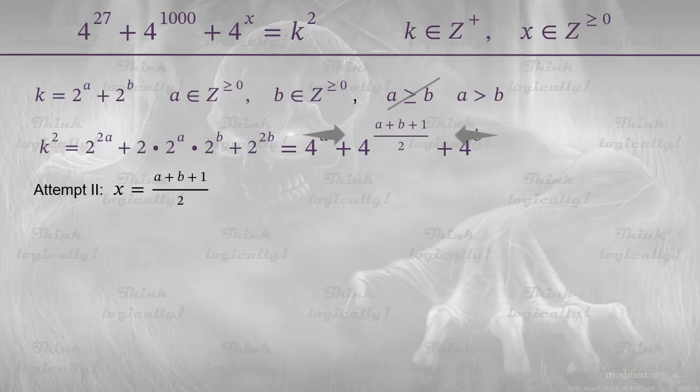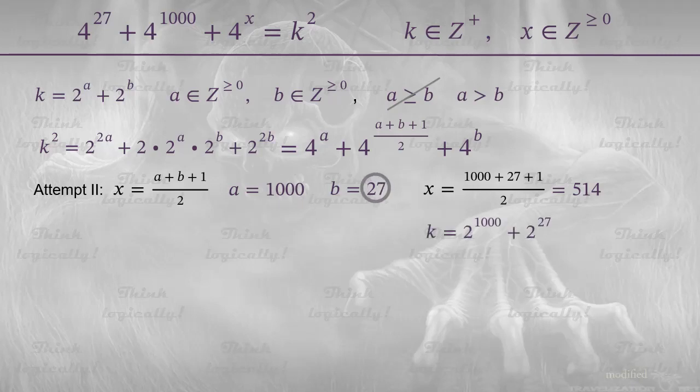Assuming x to be a plus b plus 1 over 2. Again, a is 1000. But this time b is 27. And we can find the value of x straight away. It is 514. And finding k is not a problem either. It is 2 to the power of a plus 2 to the power of b, which is 2 to the power of 1000 plus 2 to the power of 27. And the final attempt.